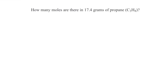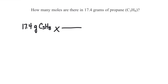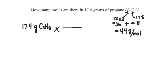How many moles of propane is in 17.4 grams of propane? Let's use dimensional analysis. First, we write the given: 17.4 grams. Now we multiply it by a conversion factor — the molar mass of propane. Propane has 3 carbons and 8 hydrogens. The molar mass of carbon is 12, and there are 3 of them, so 12 times 3 is 36, plus 8 hydrogens. The molar mass of hydrogen is 1, and there are 8 of them, so 8 times 1 is 8. We get a total of 44 grams per mole. We take 17.4 grams and multiply it by 1 mole over 44 grams, and we get an answer of 0.395 moles of propane.